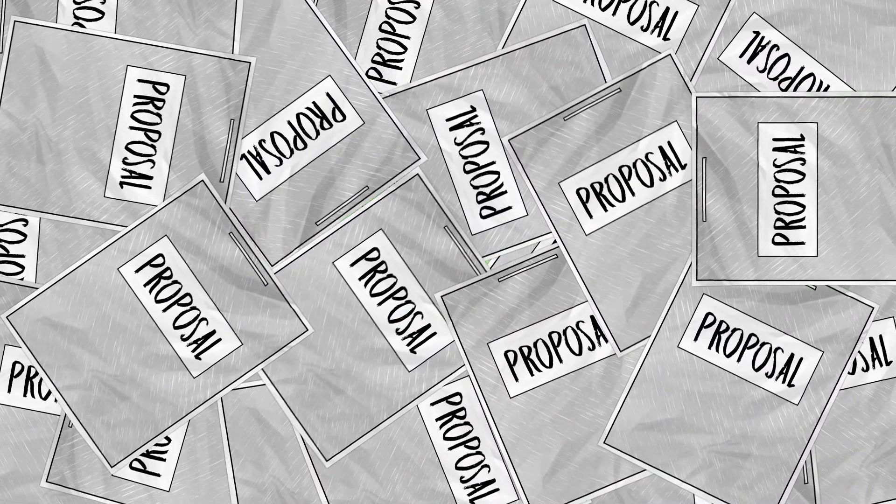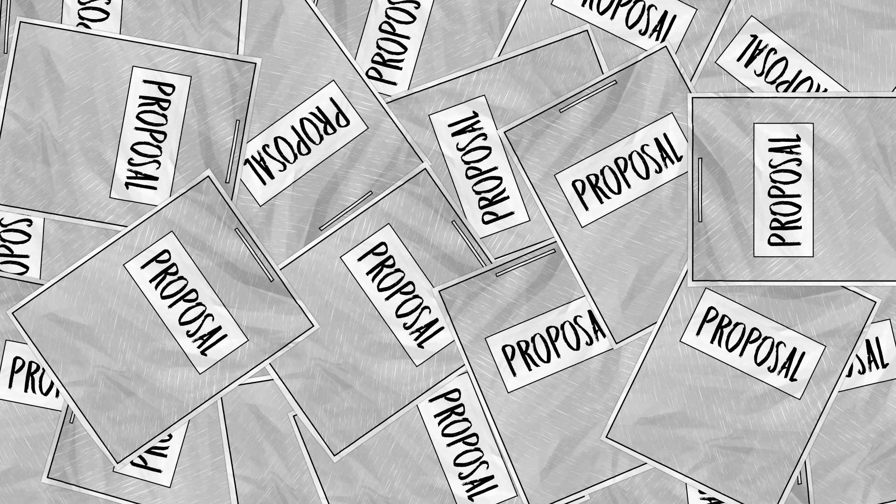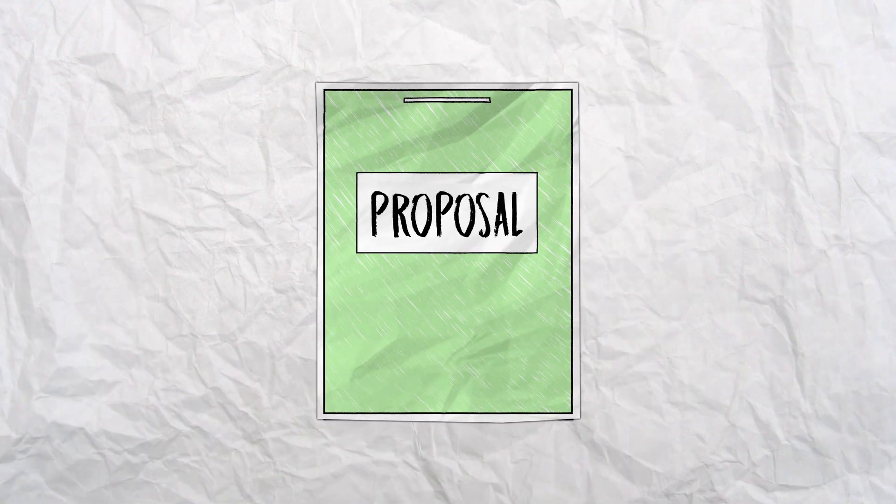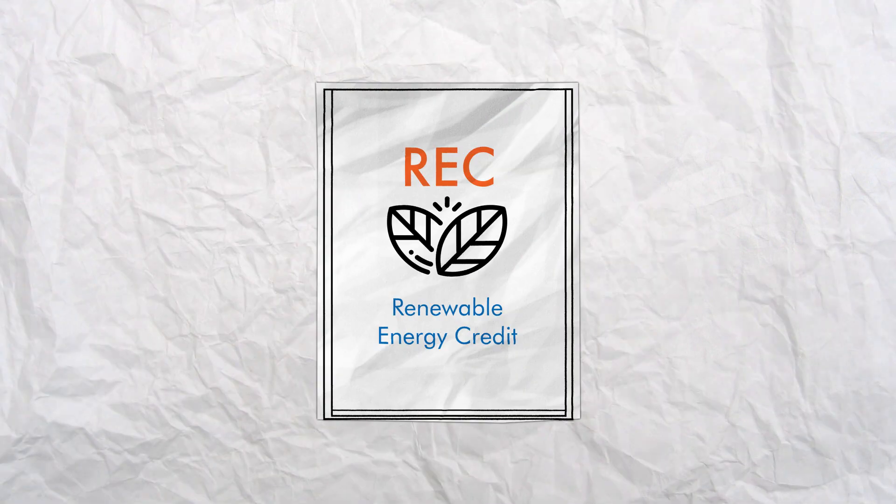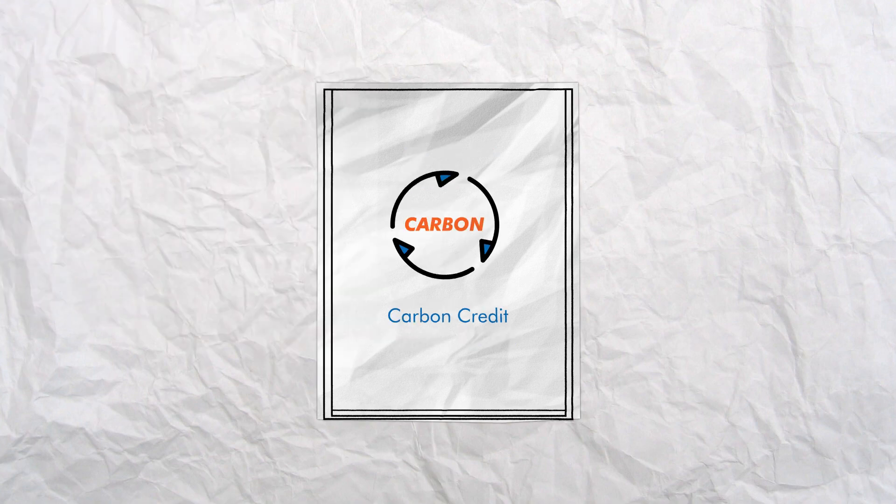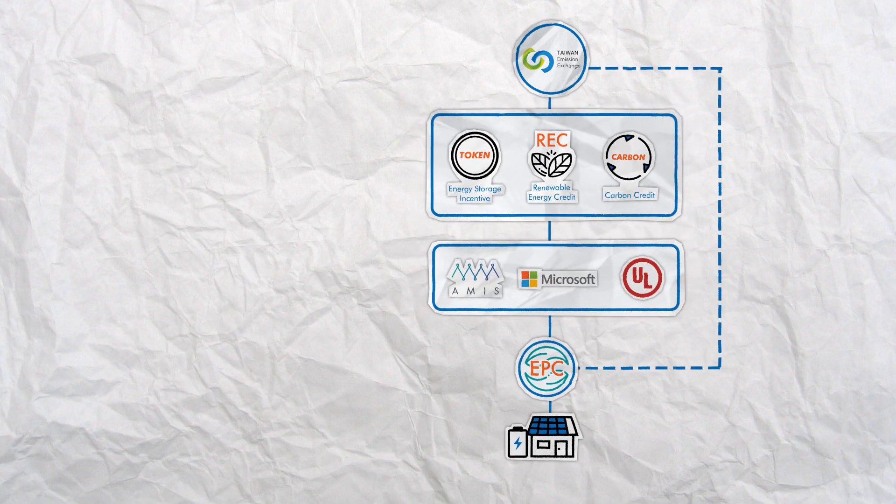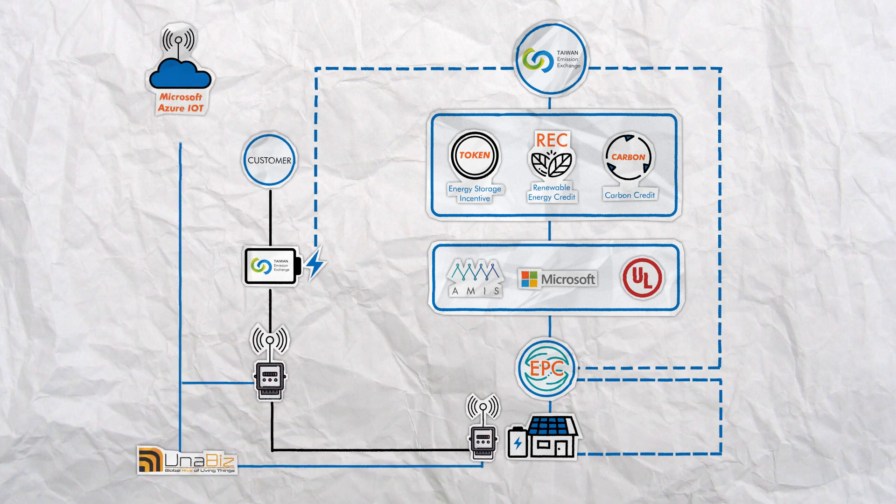There are many proposals on how to achieve this, all with advantages and disadvantages. But one solution that has great promise involves issuing a renewable energy certificate and a carbon credit which would satisfy government regulations. This solution from the Taiwan Emission Exchange leverages decentralized ledgers on blockchain to meet the objective of stabilizing energy supply and clean air.